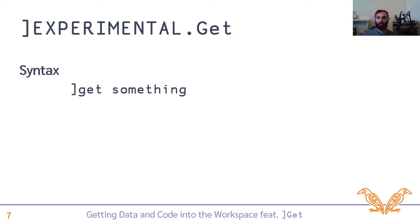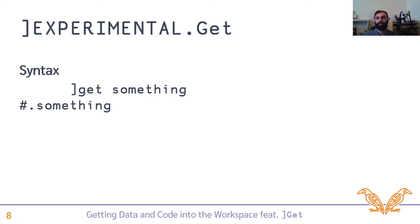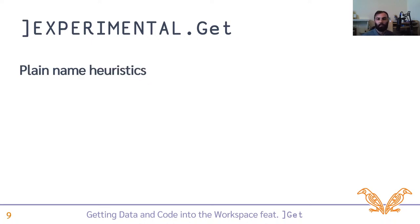The syntax itself is pretty simple: you do ]GET and then something — some description of the source of the thing you want to get. As a result of doing it, it will define at least one name, and it will print out the namespace path of that something that is defined, or it could be multiple things. It uses heuristics to figure out what it should do.